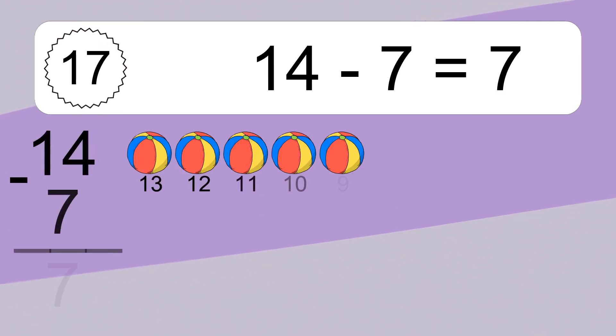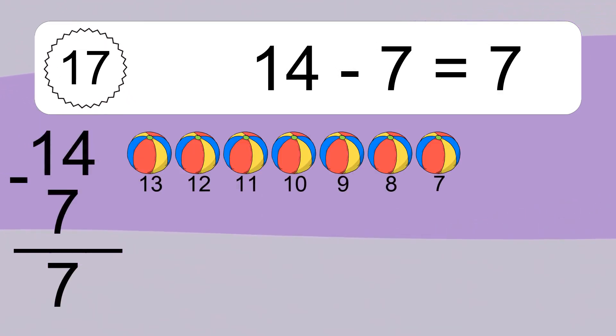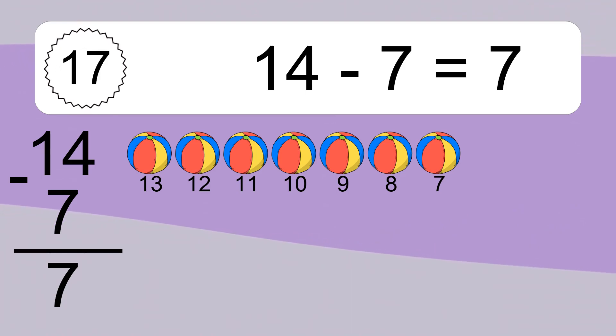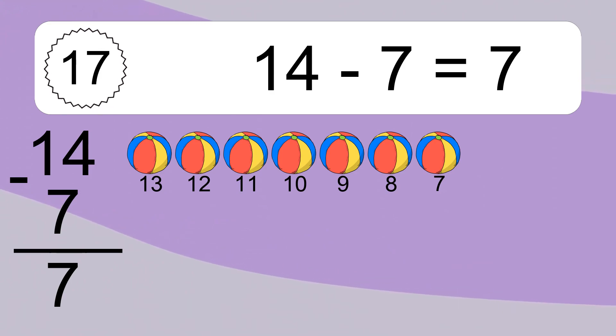14 minus 7 equals what? 14 minus 7 equals 7. Let's count it: 13, 12, 11, 10, 9, 8, 7.